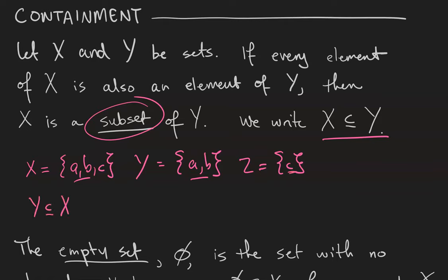Since every element of Z is also an element of X, we can also say that Z is a subset of X. Notice that every element of Y is not an element of Z, and vice versa. So Y and Z are not subsets of each other.